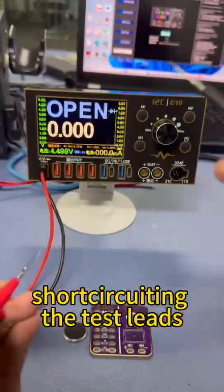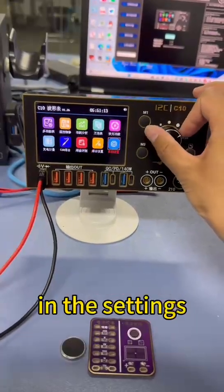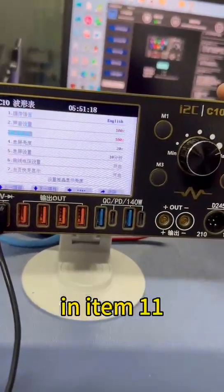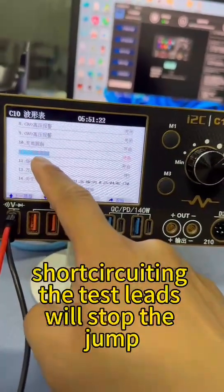Short circuiting the test leads will automatically jump to the multimeter function page. In the settings, after turning off the multimeter jump function in item 11, short circuiting the test leads will stop the jump.